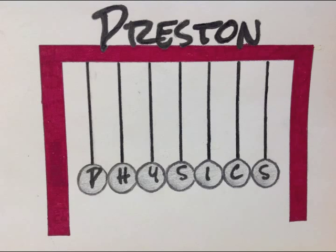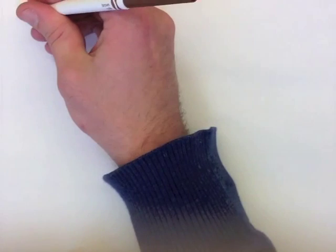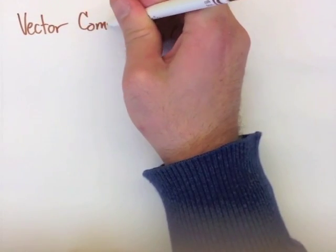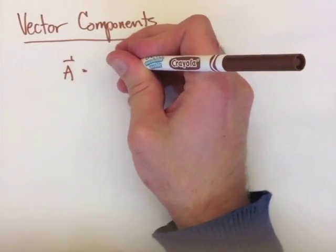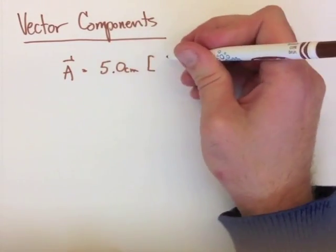Preston Physics, Grade 11, Kinematics Note 4, Vector Components. When we're looking at vector components, what we're actually thinking of is what two vectors have made up a vector that's on an angle.